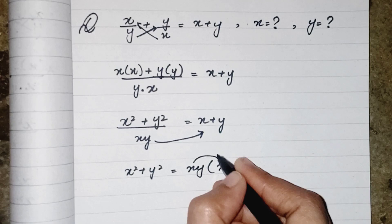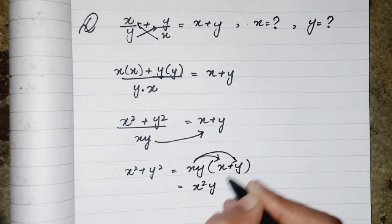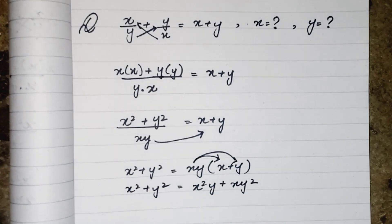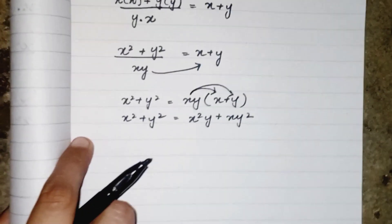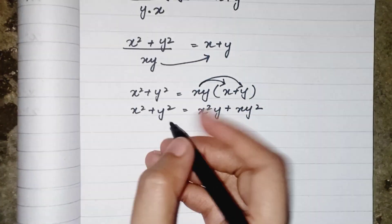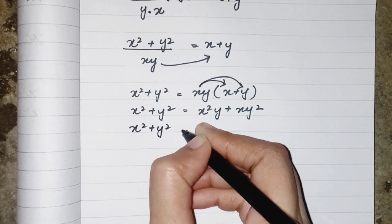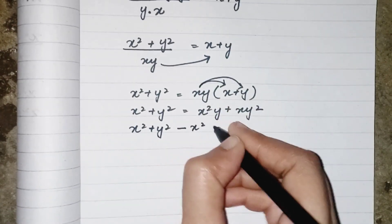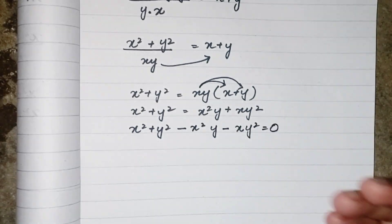When xy is multiplied by x it gives us x square y, and when multiplied by y it gives us xy square. Now we move all terms to one side so the other side equals zero. We write: x square plus y square minus x square y minus xy square equals zero.